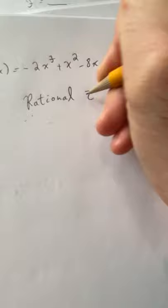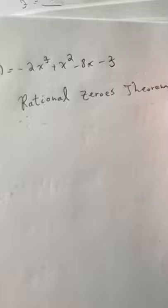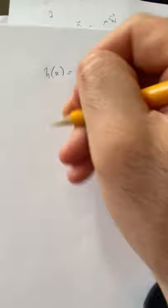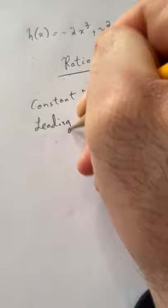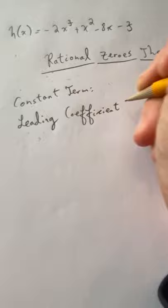Anytime you're going to apply the rational zeros theorem, what you want to do to start is write out your constant term and your leading coefficient. So your constant term is negative 3 — that's the one at the end — and your leading coefficient is negative 2.